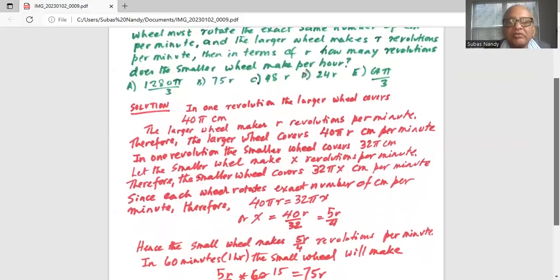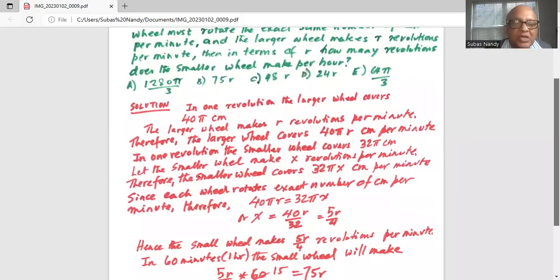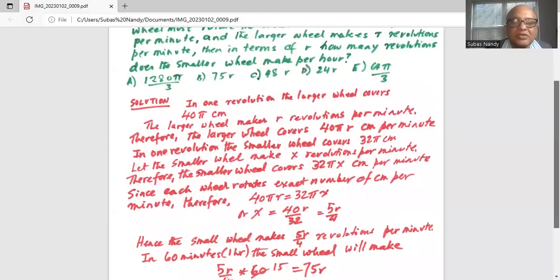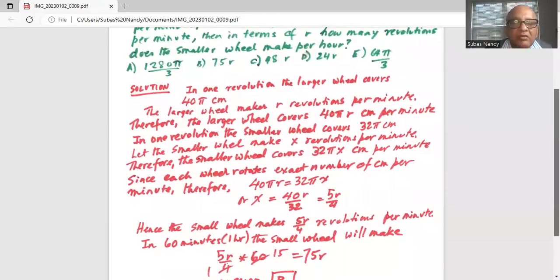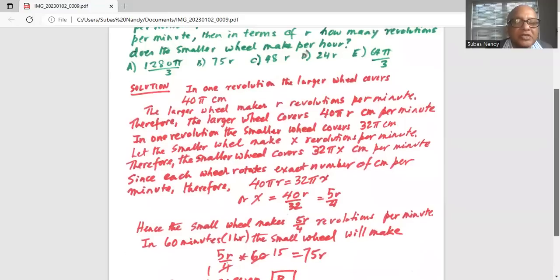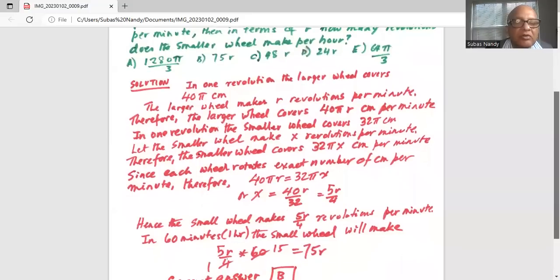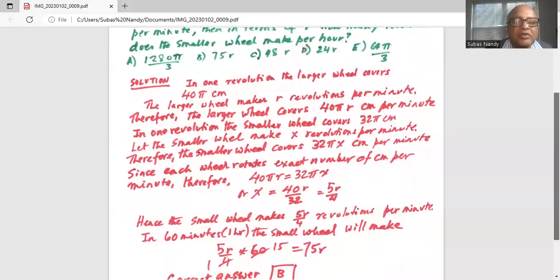Hence, the small wheel makes 5r divided by 4 revolutions per minute. So in 60 minutes, in one hour, the small wheel will make 5r divided by 4 times 60. Now 4 goes into 60 15 times. Or 4 multiplied by 15 is 60.